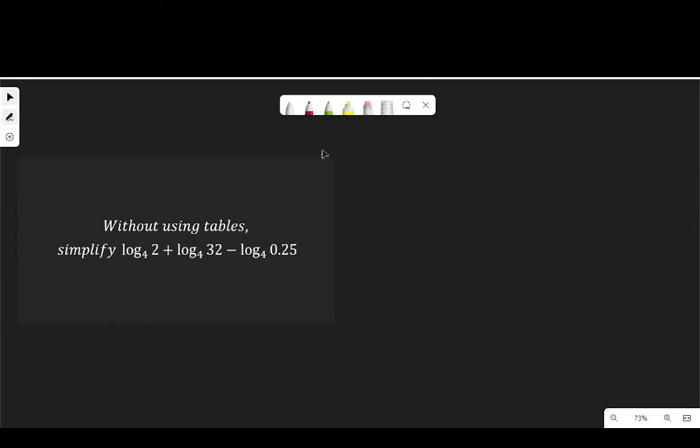To solve a question like this we are going to apply the laws of logarithm. So if I have log₄(2) + log₄(32) - log₄(0.25), I'll apply the log rule that says...